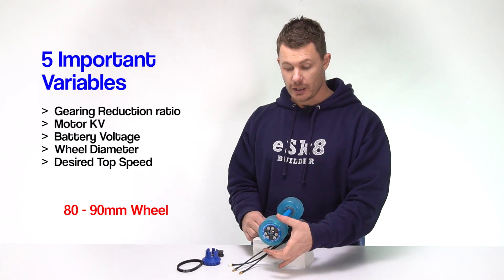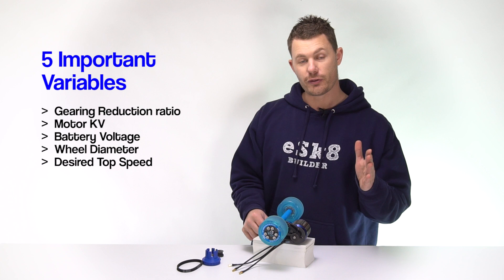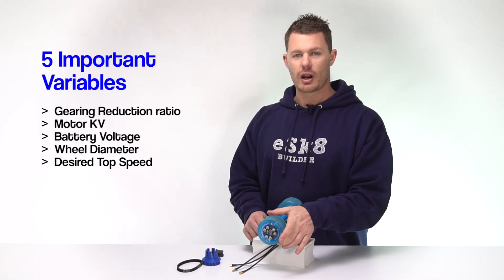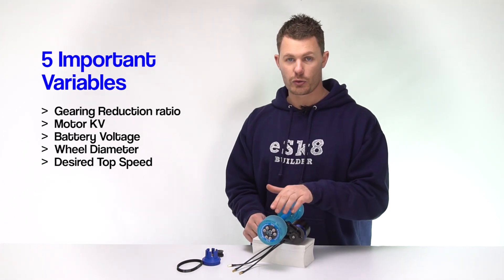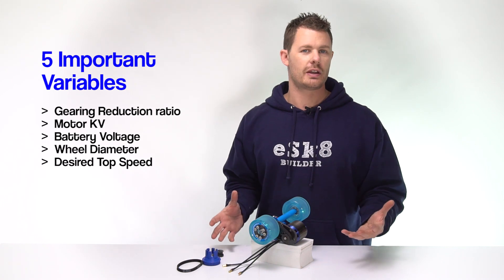The wheel diameter. The wheel diameter is important because if it gets bigger you travel further per rotation. If it gets smaller in diameter you travel less distance per rotation and the final variable is your desired top speed.